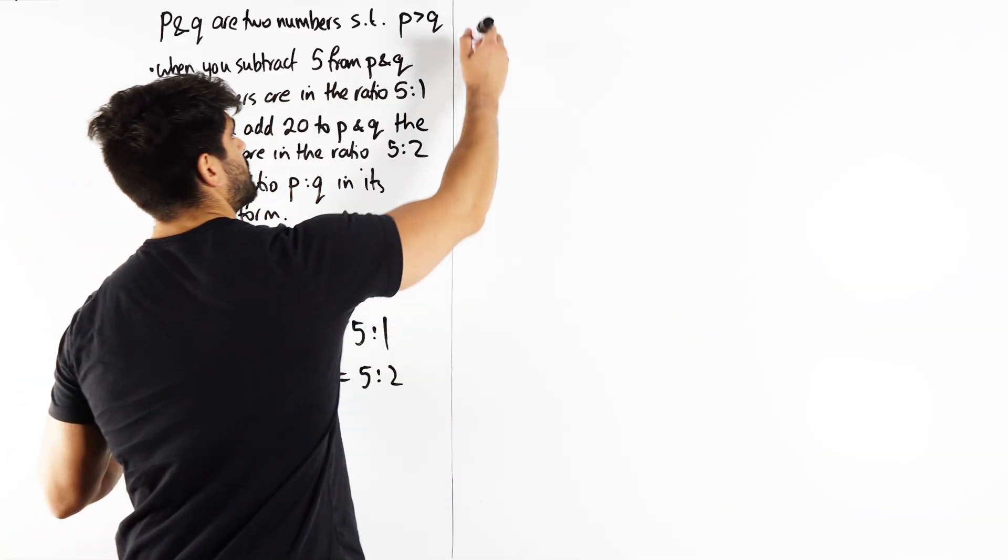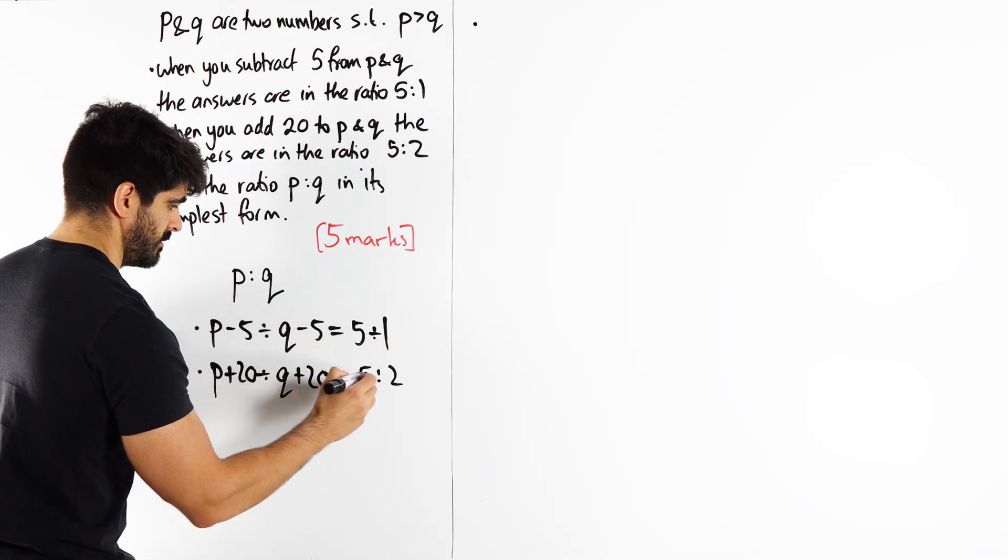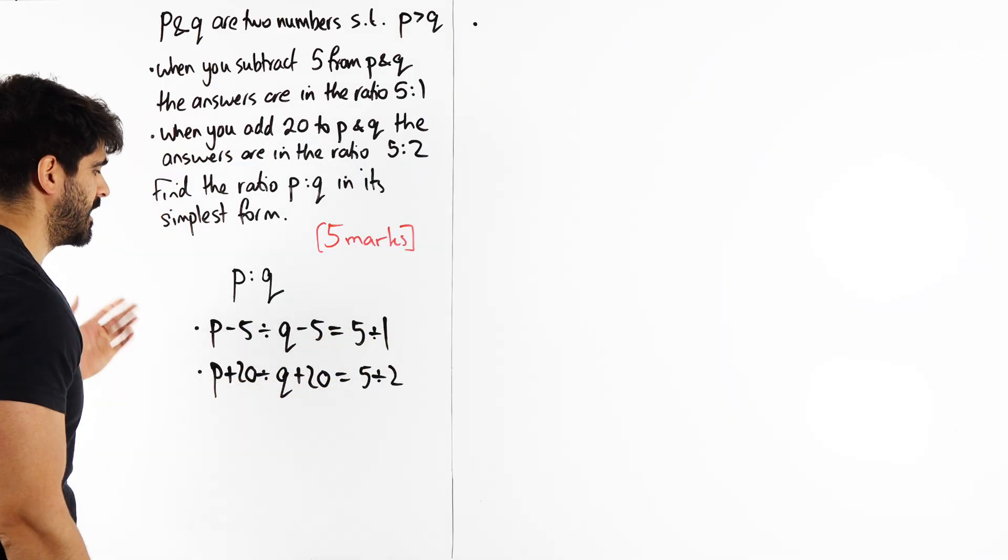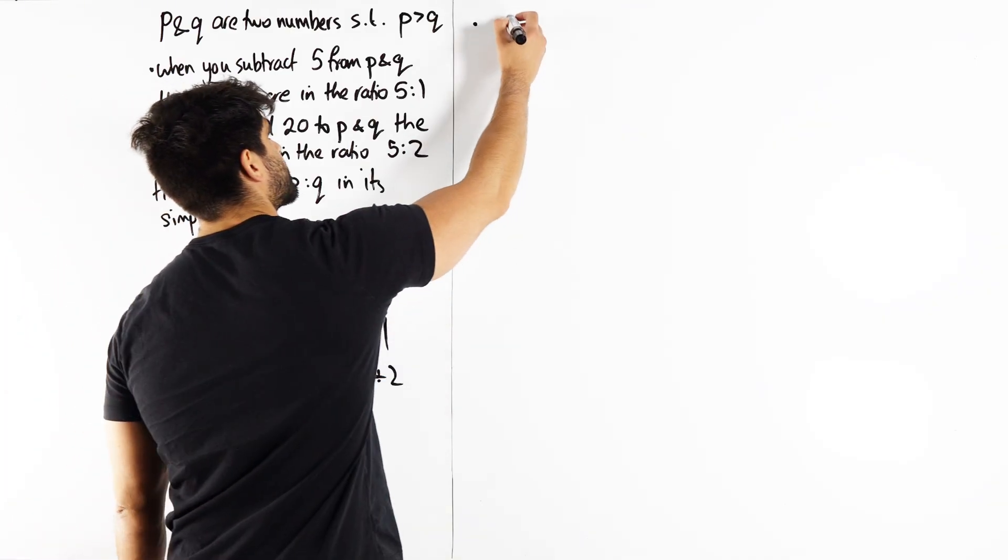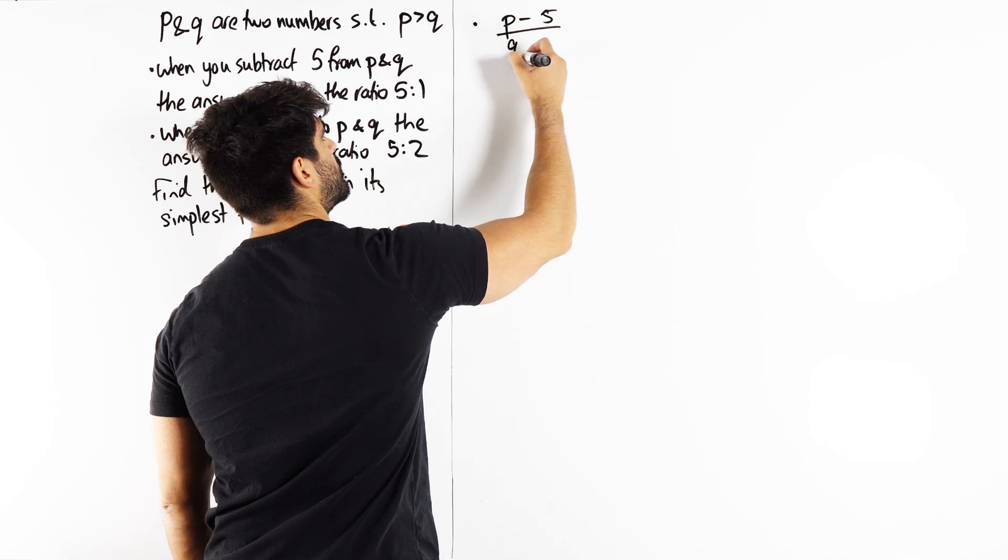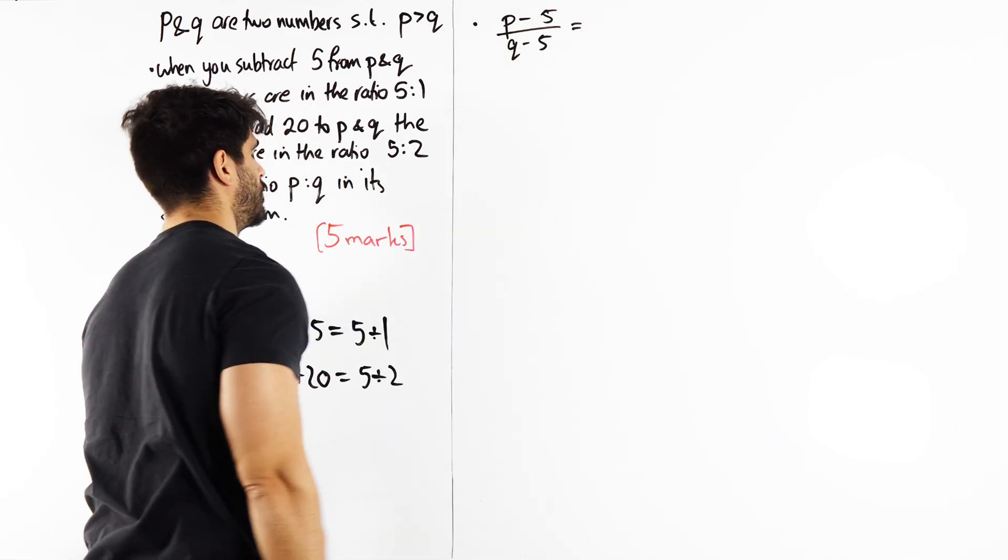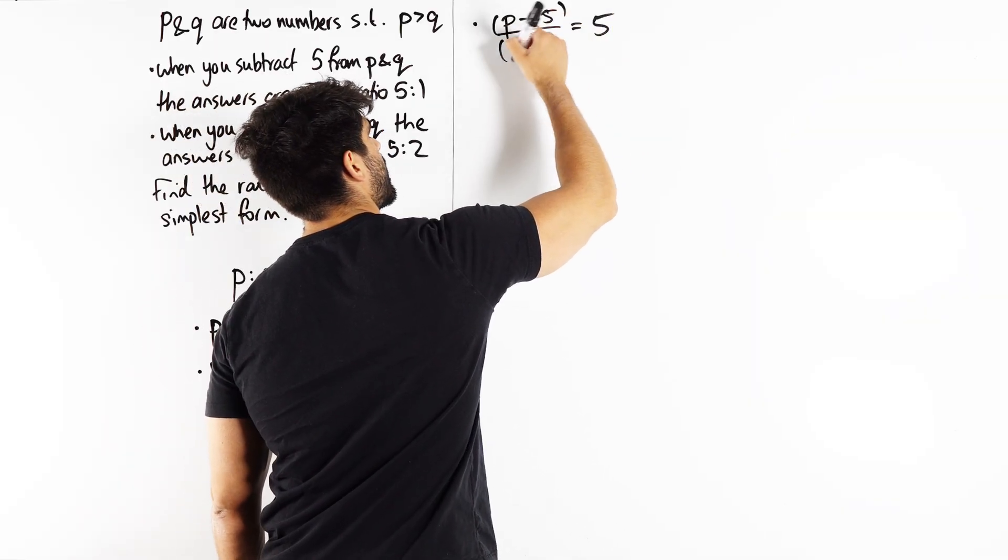So from the first equation, you can literally do this. Look at that. And then you've got your equations. P minus 5 divided by Q minus 5, we would write that as an algebraic fraction. P minus 5 over Q minus 5 equals 5 divided by 1, which is just 5.